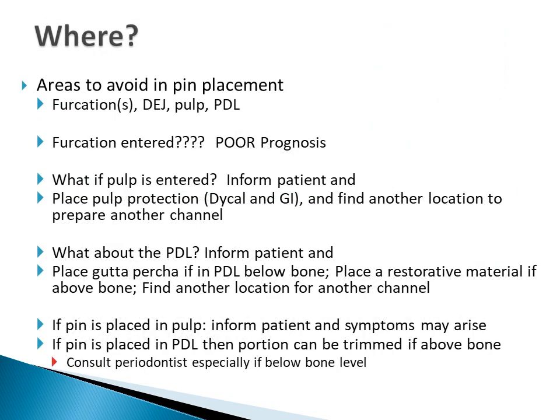When a pin is placed into a furcation or into the pulp, the tooth has a poor prognosis. If the pin channel enters the pulp, place dical and glass ionomer in the pin channel, then find another location for a pin. If the pin channel extends outside the tooth into the PDL, gutta-percha root canal filling material is used if below bone level. Restorative material is used if the perforation is above bone level. Sometimes this part of the tooth fractures and your preparation becomes larger. If the pin itself extends into the PDL, consult your periodontist. In all of these situations, inform your patient and record the information in the chart.